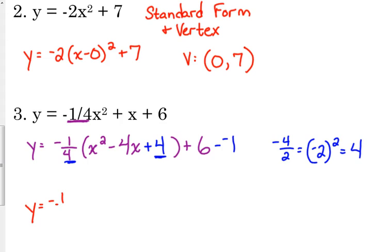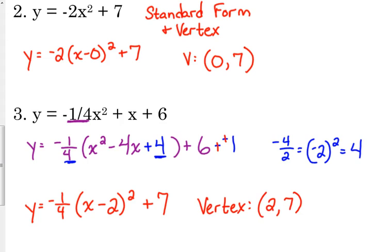So our vertex form looks like this. Negative 1 fourth, x - 2, because we squared 2 to get 4, squared. And 6 minus the negative 1. Subtracting the negative is the same as adding a positive. So that's plus 7. So our vertex here would be positive 2, positive 7.